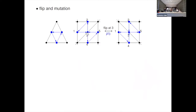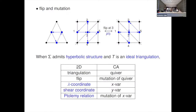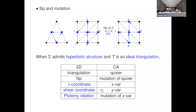If you mutate at vertex 3 of this quiver, you obtain a new quiver. This is a nice correspondence. When the surface admits a hyperbolic structure and T is an ideal triangulation, this is the dictionary between cluster algebra and 2D hyperbolic geometry. The quiver is the triangulation, and mutation of a quiver is a flip — a change of triangulation. X variables are related to lambda coordinates on the surface, Y variables are related to shear coordinates, and mutation of X variables is nothing but the Ptolemy relation for lambda coordinates.